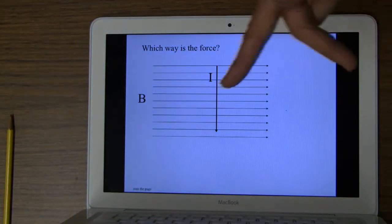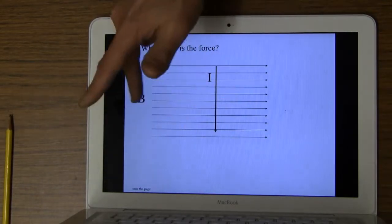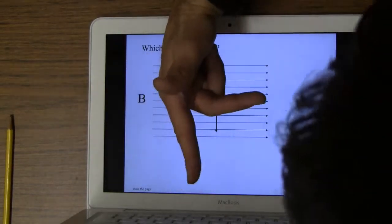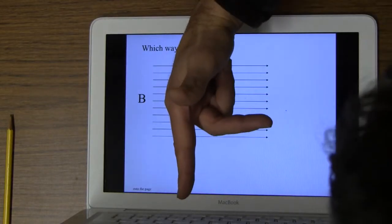So, for example, on this guy, my current is that way, my magnetic field, as those lines show, is that way, and so therefore this force is actually out of the page.